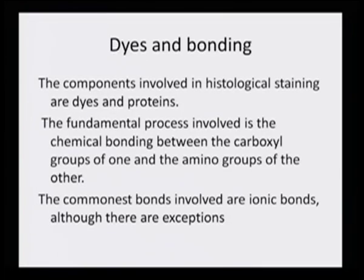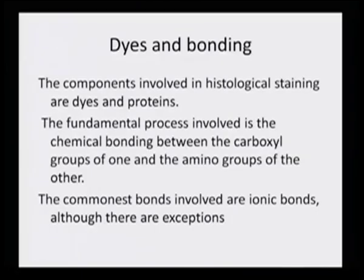Dyes and bonding — the components involved in histological staining are dyes and proteins. If we just take a simple case of doing a blood test or some kind of a color difference, there has to be some source of protein and some color. The fundamental process involved is the chemical bonding between the carboxylic group of one and the amino groups of the other. The commonest bonds involved are ionic bonds.